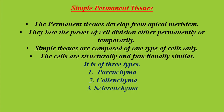The permanent tissue is developed from the apical meristem. Meristematic cells have the ability to divide continuously without interruption and form daughter cells. Some of these cells lose their power of cell division either permanently or temporarily, forming the permanent tissue. This process of forming permanent tissue from meristematic tissue is called differentiation.